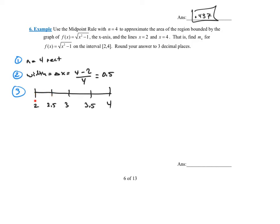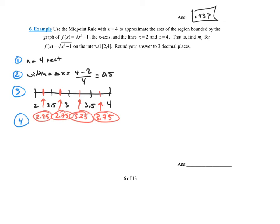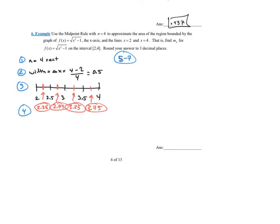The first rectangle is from 2 to 2.5. If it was the left endpoint we'd use 2; if the right, 2.5 — but they want the midpoint. To find the midpoint, we add the two numbers and divide by 2. So 2 plus 2.5 divided by 2 is 2.25. Then 2.5 plus 3 divided by 2 is 2.75. Then 3 plus 3.5 divided by 2 is 3.25. And 3.5 plus 4 divided by 2 is 3.75. The fourth step is to identify which points to use — those are our x-values.